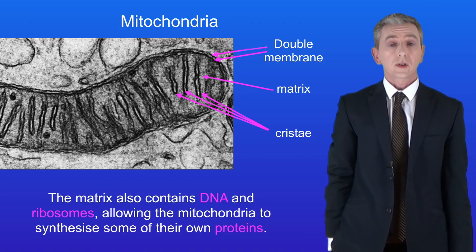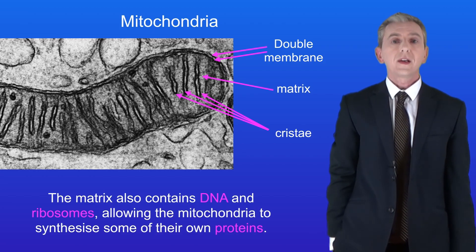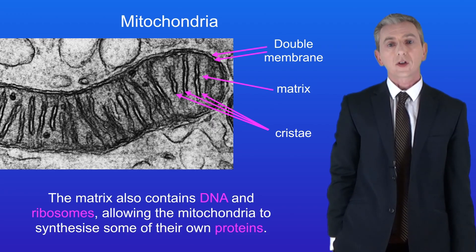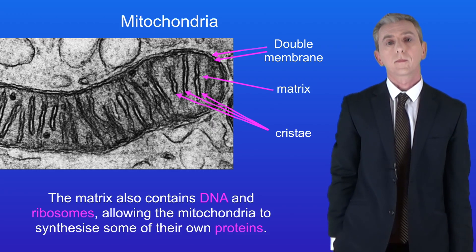The matrix also contains ribosomes. Together with the DNA, these ribosomes mean that the mitochondria can synthesize some of their own proteins.